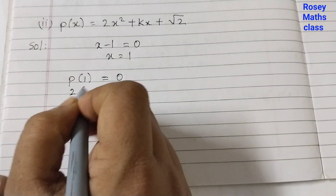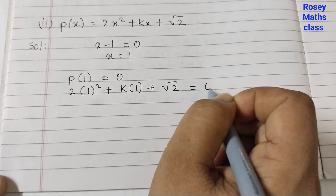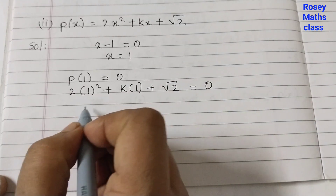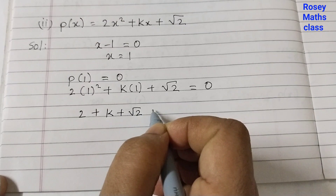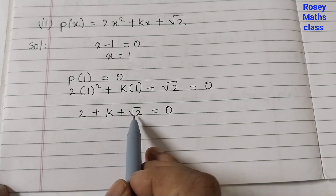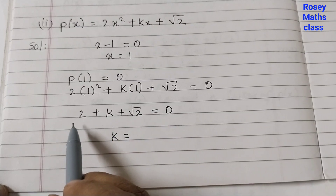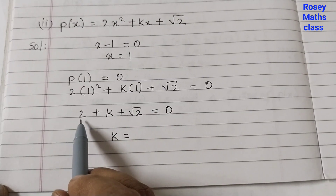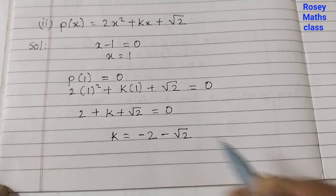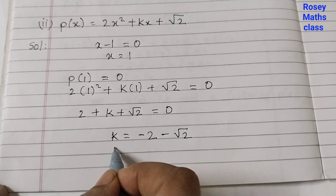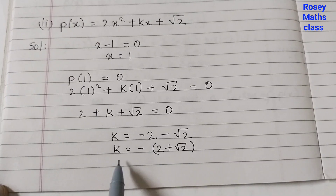2 times 1 squared plus k times 1 plus root 2 equals 0. 1 squared is 1, so 2 times 1 is 2, plus k plus root 2 equals 0. Now we take 2 and root 2 to the other side — when changing sides the sign changes, the number doesn't change. So k equals minus 2 minus root 2. Taking minus as common factor, k equals minus of (2 plus root 2). That is the answer for k.